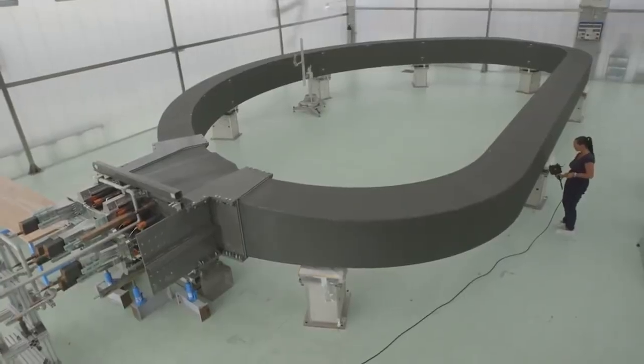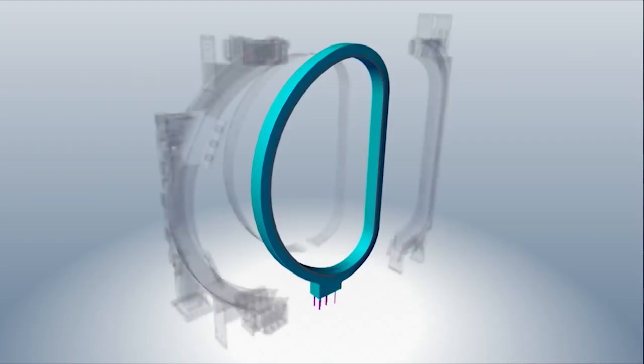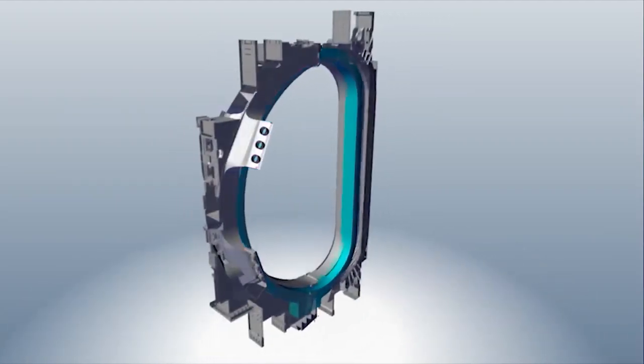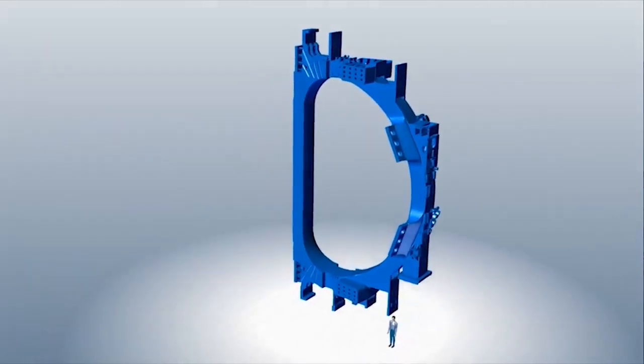How? Well, first there are the six ring-shaped poloidal field magnets. Their job is to keep the plasma away from the walls of the vacuum vessel. They'll be assisted by their friends, the 18 toroidal field magnets.